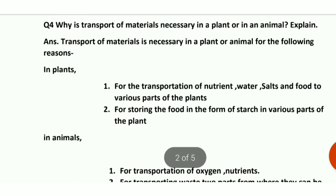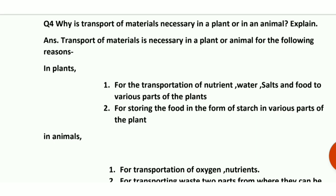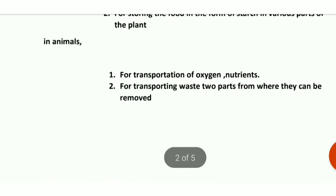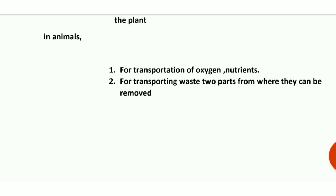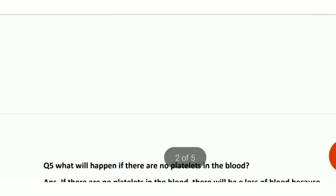Question number 4: why is transport of materials necessary in a plant or in an animal? Transport of materials is necessary for the following reasons. In plants, nutrients, water, salts, and food need to reach various parts. Food made during photosynthesis is stored in different parts as starch. In animals, hemoglobin transports oxygen, blood carries nutrients, and waste produced by cells — which is toxic — must be transported to proper locations for removal.